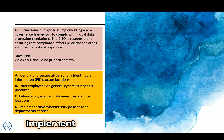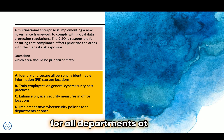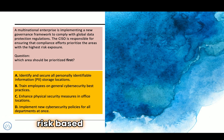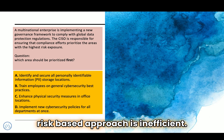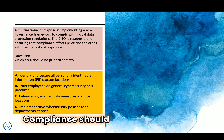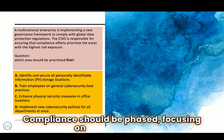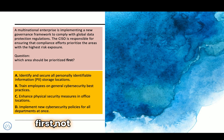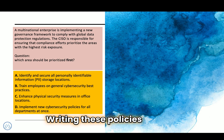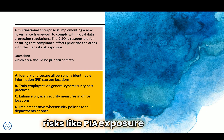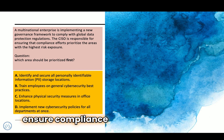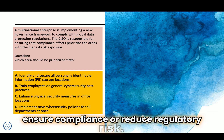Option D — implement new cybersecurity policies for all departments at once — reflects a blanket policy rollout without a risk-based approach, which is inefficient. Compliance should be phased, focusing on high-risk areas first — not a one-size-fits-all strategy. Writing policies without addressing real risks like PII exposure does not ensure compliance or reduce regulatory risk.